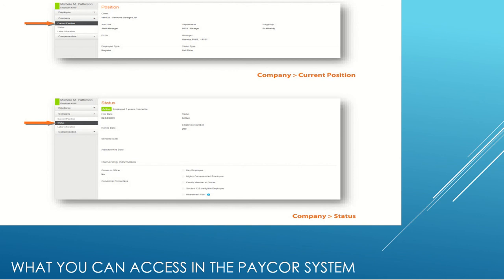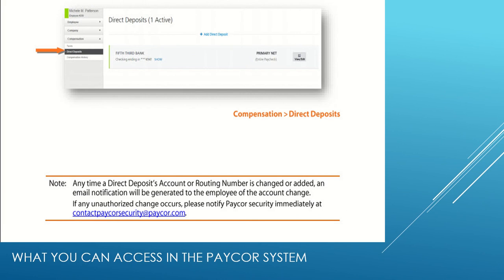The goals and performance review pages are only available to PACOR clients that utilize the Perform HR services, so that access will not be available to you. The third drop-down menu is Compensation, which includes Taxes, Direct Deposit, and Compensation History.